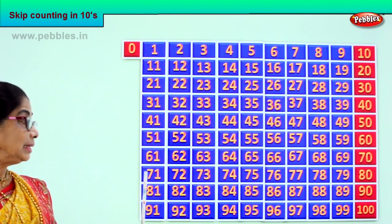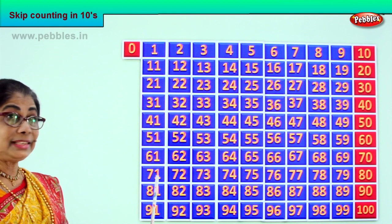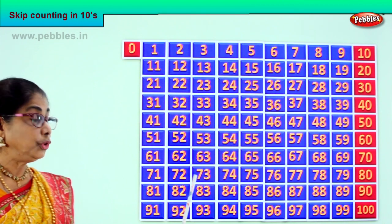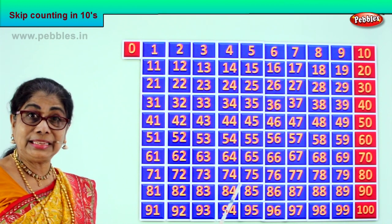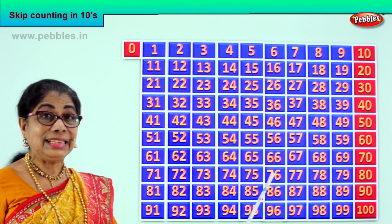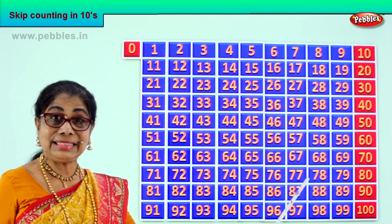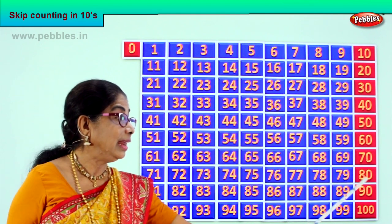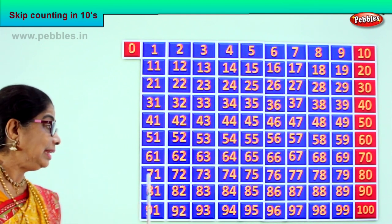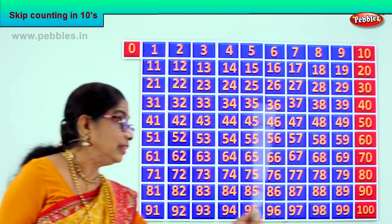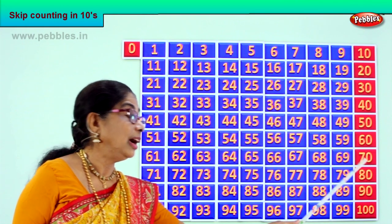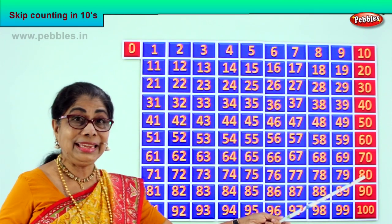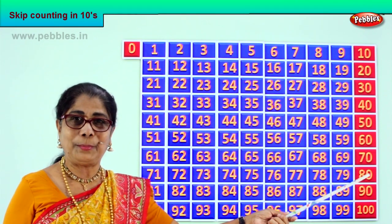After seventy: seventy-one, seventy-two, seventy-three, seventy-four, seventy-five, seventy-six, seventy-seven, seventy-eight, seventy-nine, eighty. From seventy-one after seventy — seventy-one to eighty we jump.